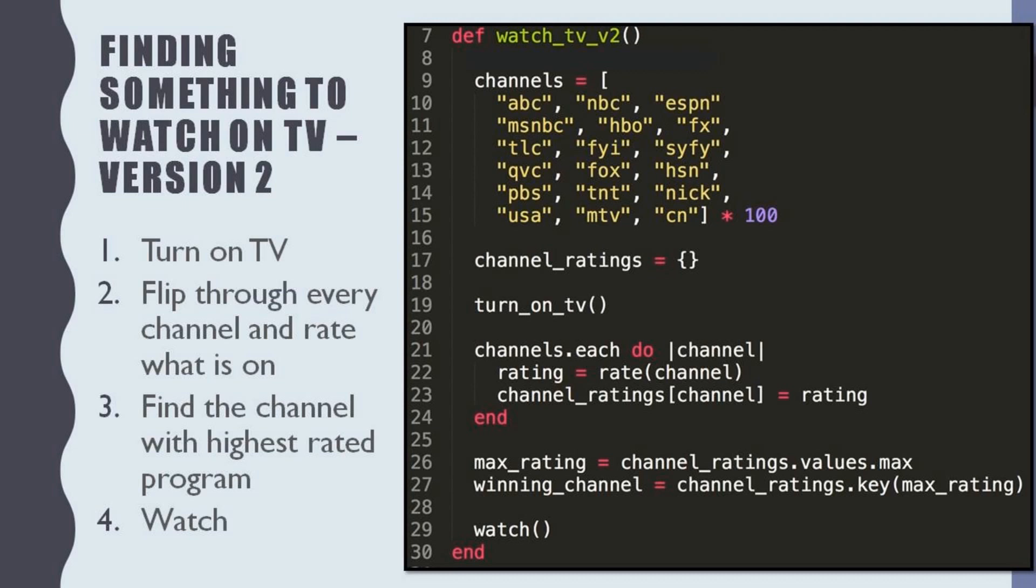From the code lines 21 to 24, we are looping through each and every TV channel in the list. From the code line 22, we call the rate method with the TV channel and take the rating of that program in the TV channel. From the code line 23, we assign that rating into our empty list channel rating with the TV channel.